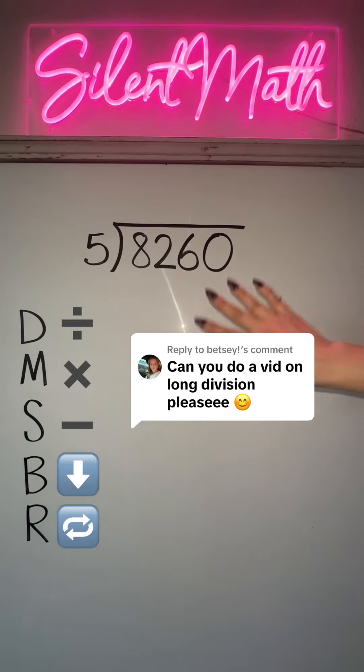Can you do a video on long division please? We're going to use DMSB for long division. D stands for division, M is multiply, S is subtract, B is bring down, and R is repeat the process if you have more digits. You're going to look at your outside number and your goal is to figure out how many groups of 5 can go into 8,260.